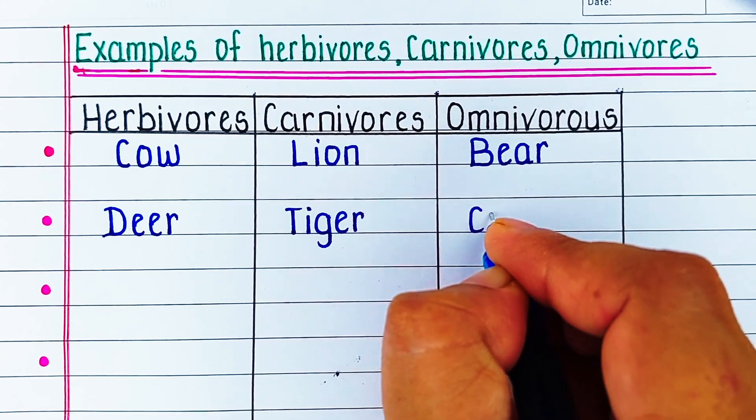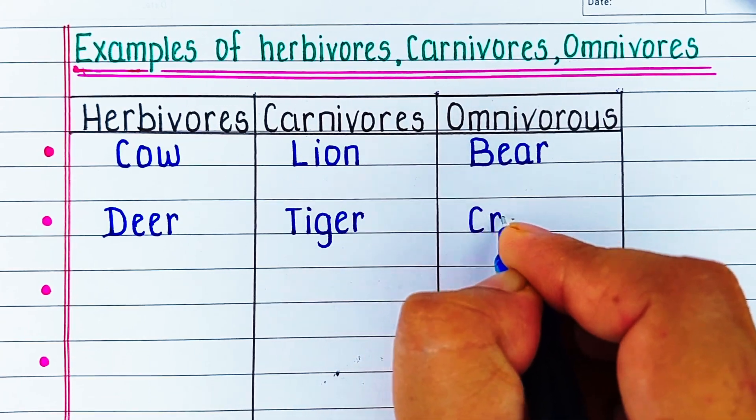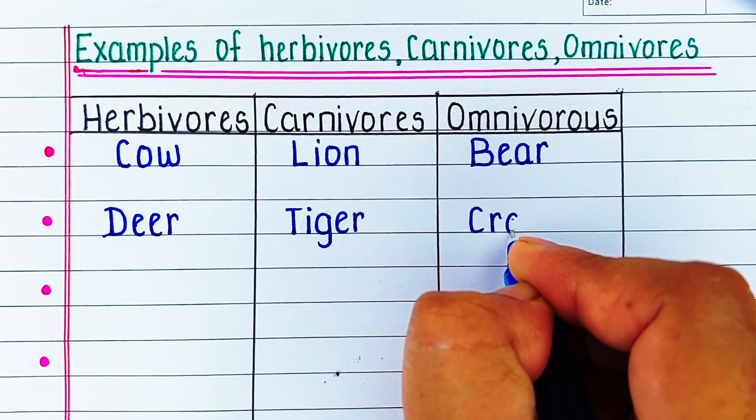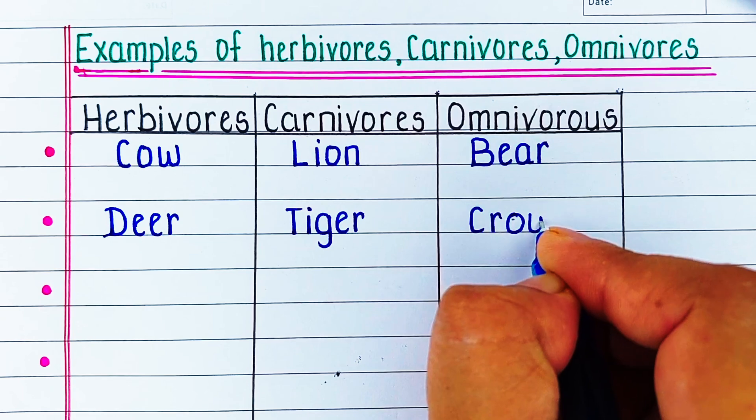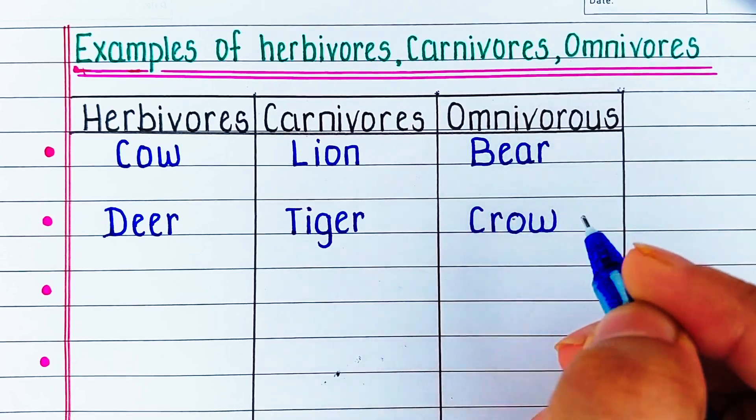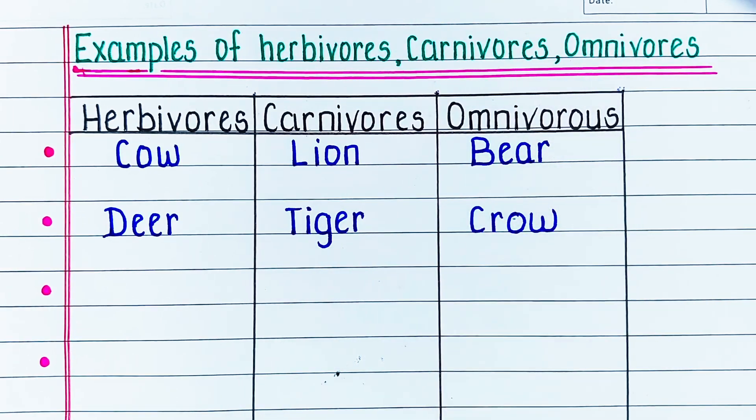Now, let's start learning their examples one by one. Let's start with herbivores.